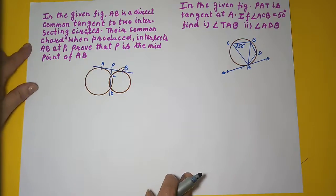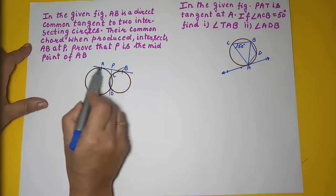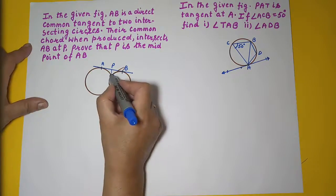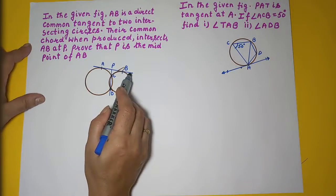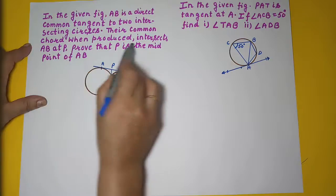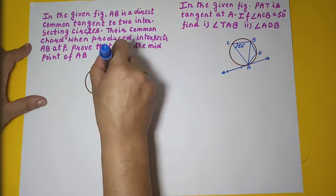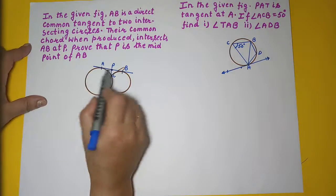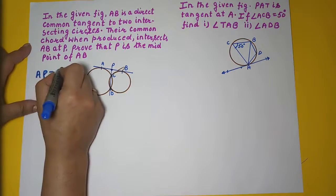Now we have another problem. We are given two intersecting circles intersecting at points C and D, with AB as the direct common tangent. Their common chord CD, when produced, meets the tangent at point P. We need to prove that P is the midpoint of AB, i.e., PA = PB.